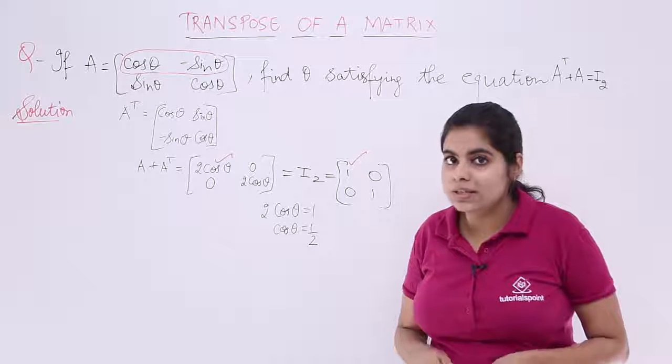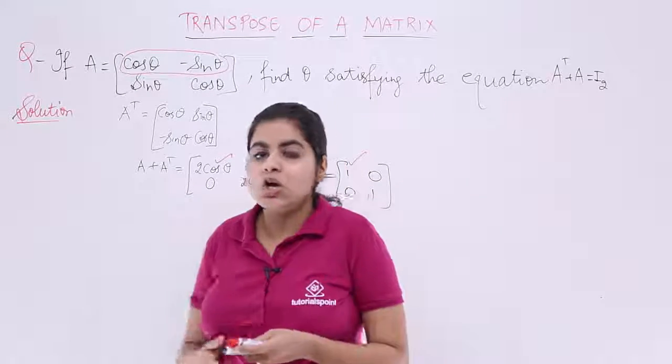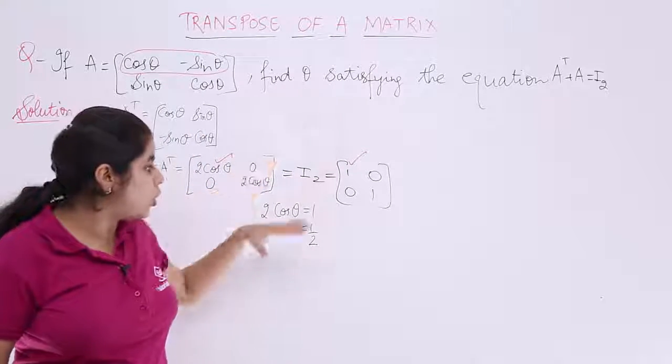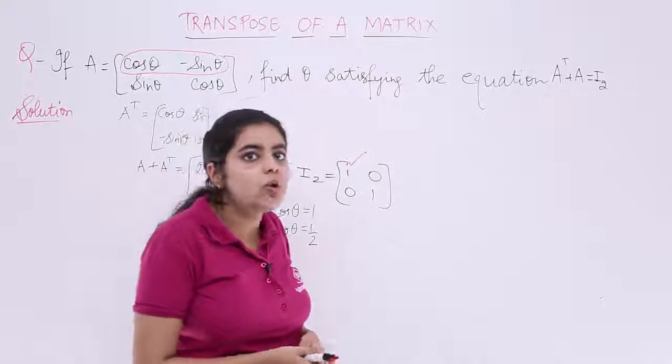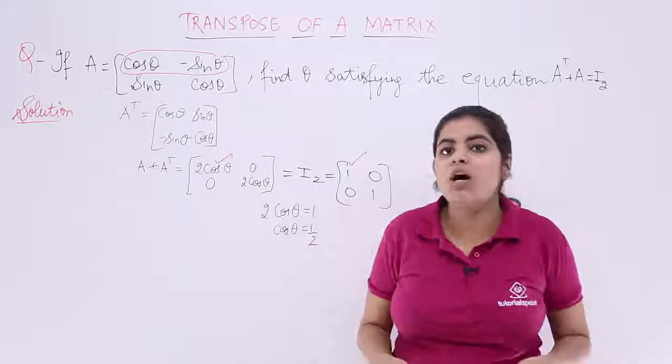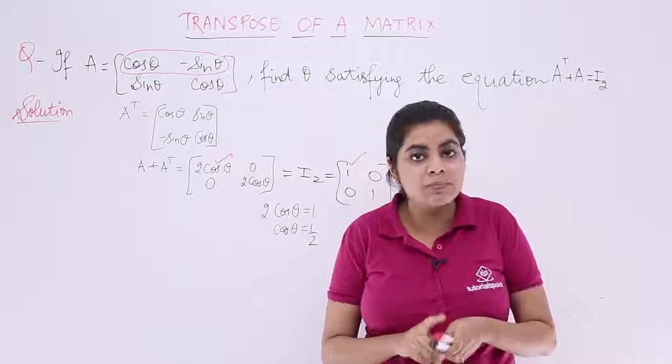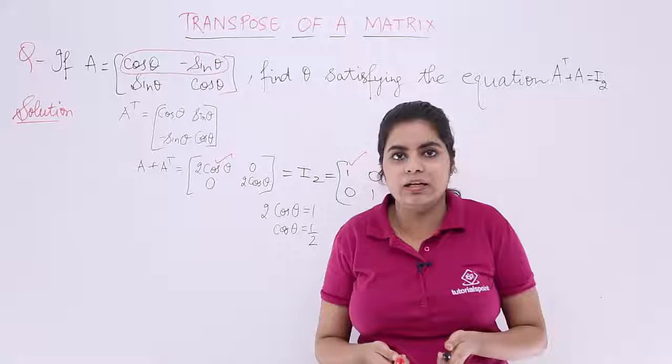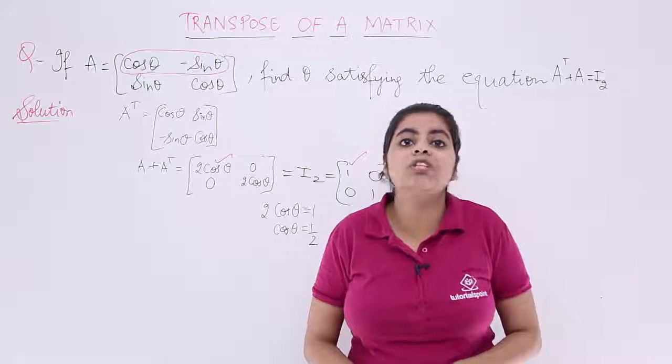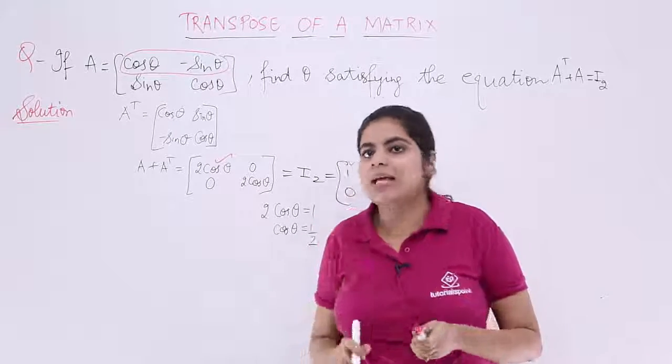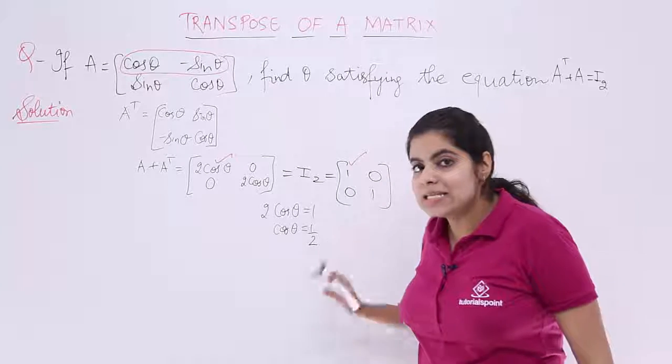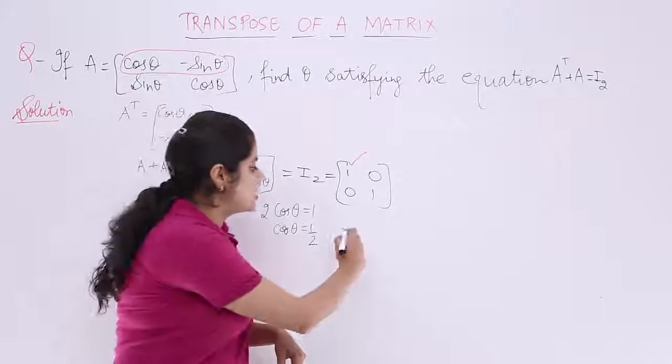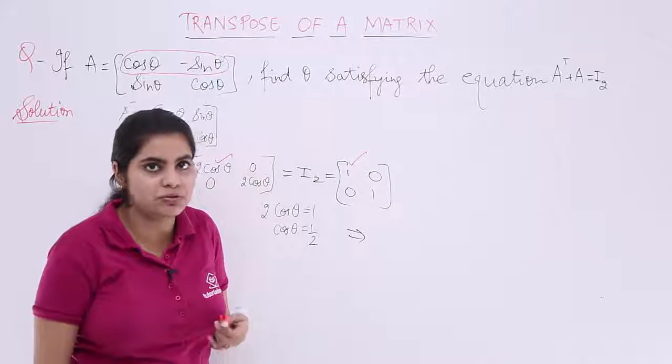When cos theta equals 1 by 2, I was not supposed to find cos theta. Rather, what I was supposed to find was theta. If cos theta is 1 by 2, I know that for what angle of theta is cos 1 by 2? For 60 degrees. But we are not supposed to find only the acute angle. The angle can be anything, so we need to provide the generalized solution.